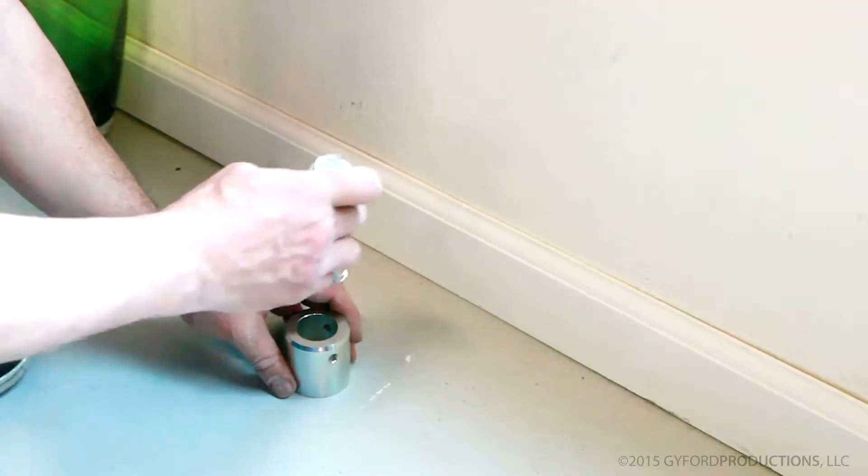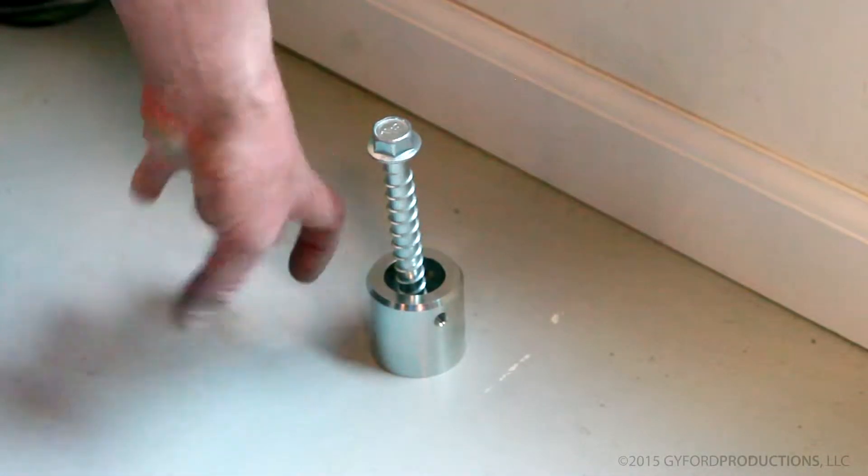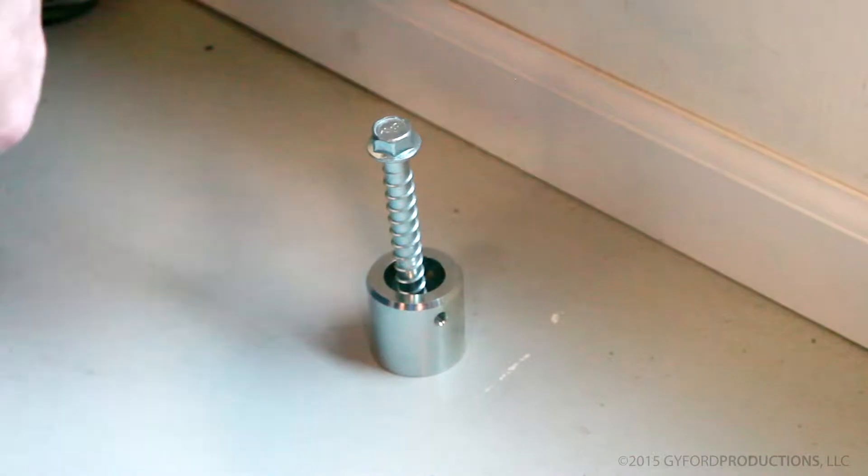Then thread the anchor through the base mount and into the floor. If you've ordered your tube with pre-tapped holes you'll need to rotate the base mount to align them in the proper orientation.